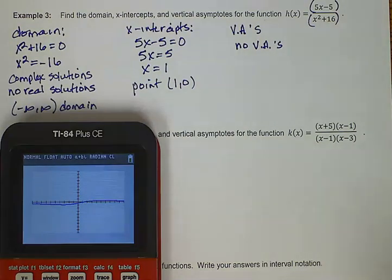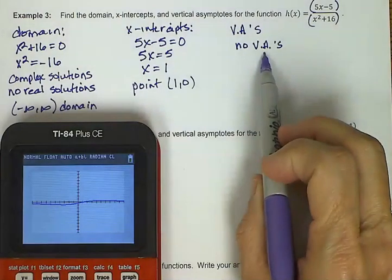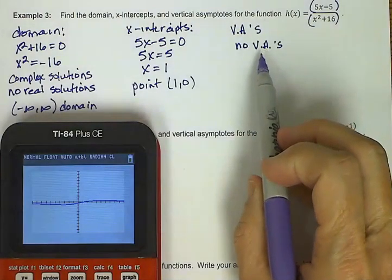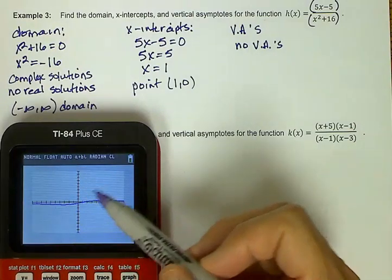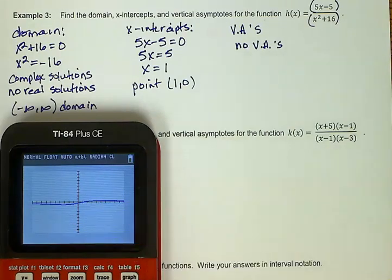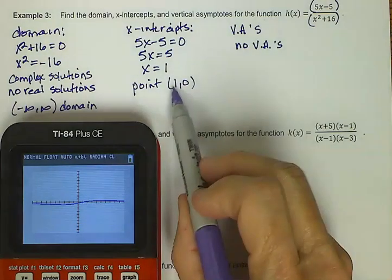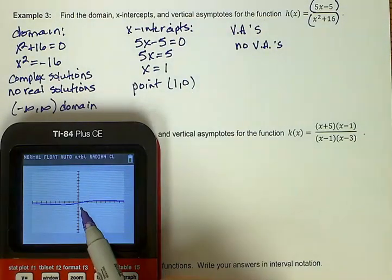This graph looks a lot different than the other ones we've done. That's partly because there are no vertical asymptotes. So we don't see any of that behavior where we've got something going up towards positive infinity or going down towards negative infinity. We just have a more flat graph. But we do see the x-intercept, which is at the point 1, 0. That's right there.